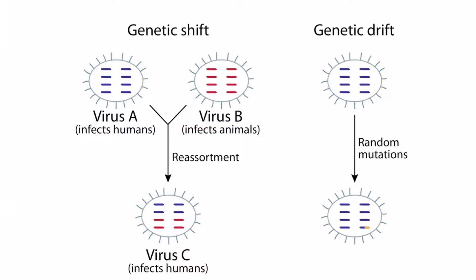Here is a diagram showing genetic shift and genetic drift. We're going to focus on the left portion — genetic shift. Virus A has eight segments of purple-colored RNA strands, whereas virus B has eight pink-colored RNA strands. In other words, the two genomes are drastically different from one another. Influenza is the most notable example of genetic shift, so keep influenza in the back of your mind as we move through this diagram.